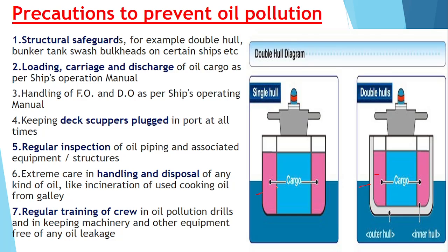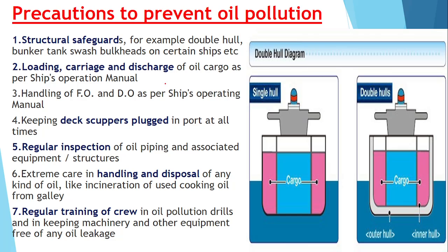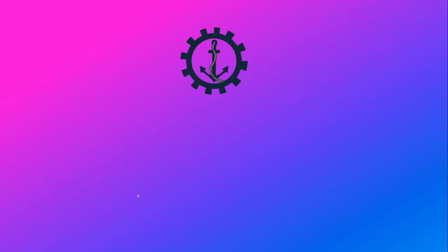If the outer frame is ruptured, oil will not come out because there is still the inner frame — both frames must be ruptured before oil can escape, thus preventing oil pollution. Other precautions include: loading, carriage and discharge of oil cargo as per the ship's operation manual; ensuring deck scuppers are plugged; properly bunkering fuel and diesel oil; regularly inspecting oil piping; taking extreme care in handling and disposal of all kinds of oil; and conducting regular crew training drills with respect to SOPEP — the Shipboard Oil Pollution Emergency Plan.